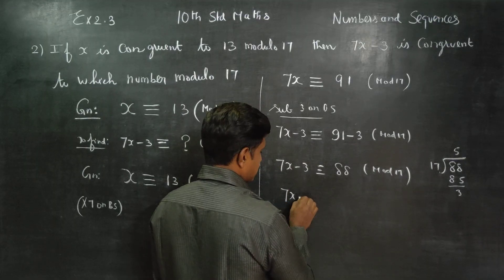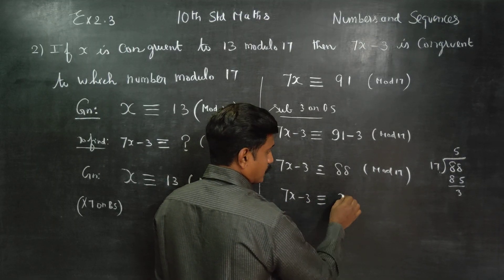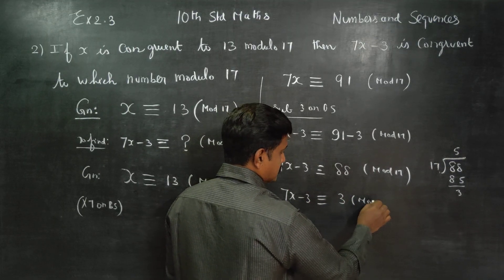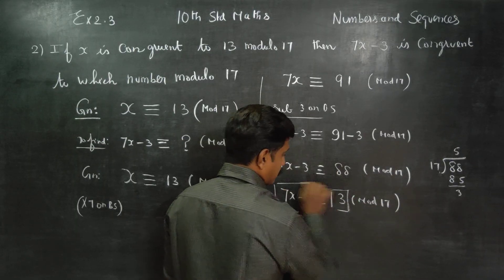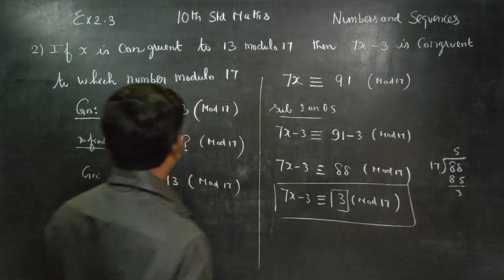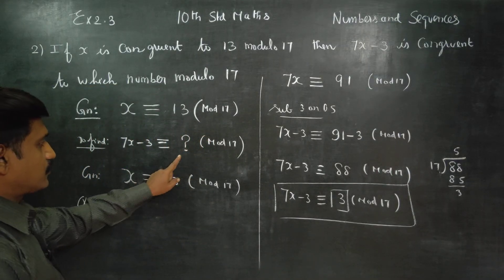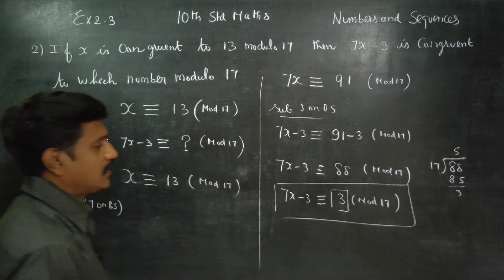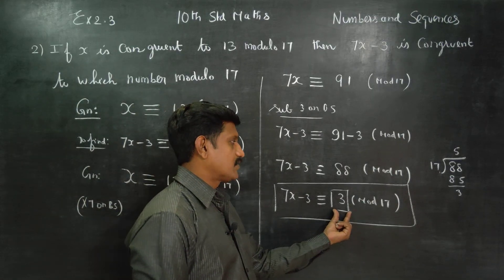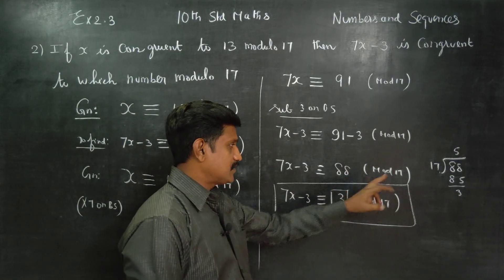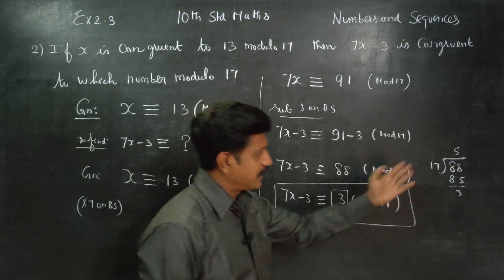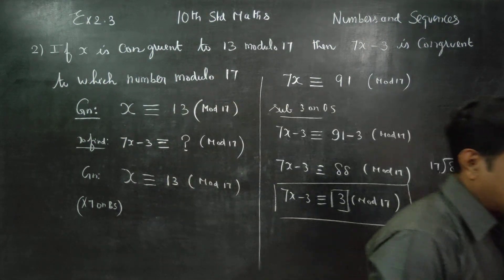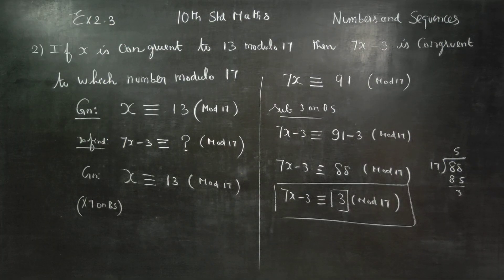7x-3 is congruent to 3 mod 17. 7x-3 is congruent to what number, which number mod 17 is congruent to what number. 88 is congruent to 17. That is your result.